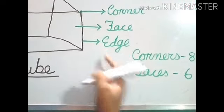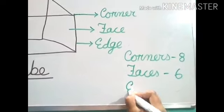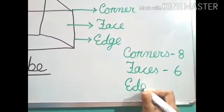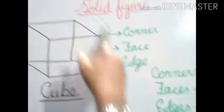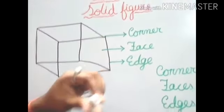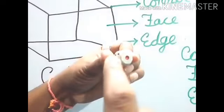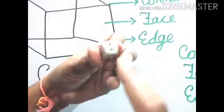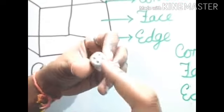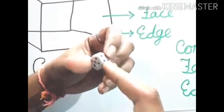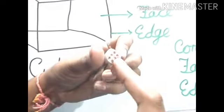And last one is edges. How many edges? Edges is 12. We can count it here also. We can count it here. First, I am showing it here. One, two, three, four, five, six, seven, eight, nine, ten, eleven, and twelve.